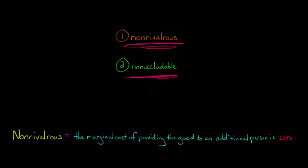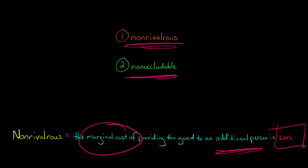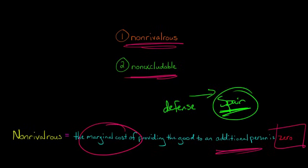What non-rivalrous means is that the marginal cost of providing this good to one extra person would be zero. Let's take national defense as an example. Say the military of Spain, their national defense, and you're thinking of moving to Spain. If you move to Spain, what is going to be the marginal cost of Spain's national defense? Well, it's going to be zero.